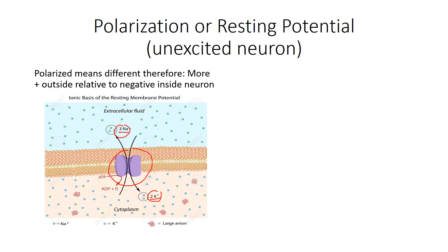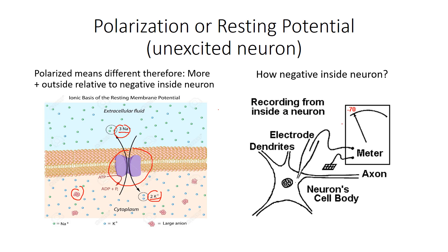What accounts for the negativities on the inside? There are large anions, which are just negatively charged molecules — a lot of them are going to be negatively charged proteins. We also have some negative chlorines in there as well. That's why we have more negative charges inside the neuron relative to outside. When we actually measure this with an electrode placed inside a neuron at rest, it will be approximately minus 70 millivolts inside — that's how negative it is at resting potential.